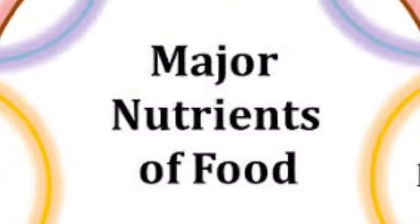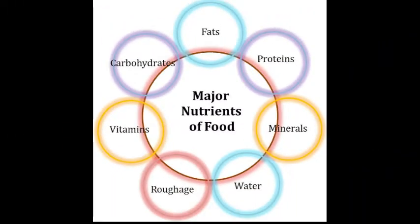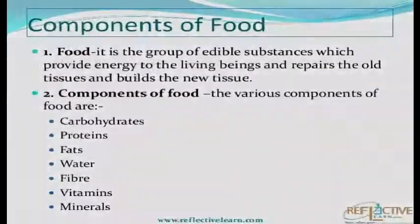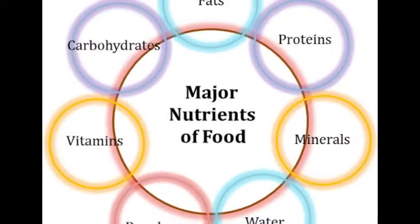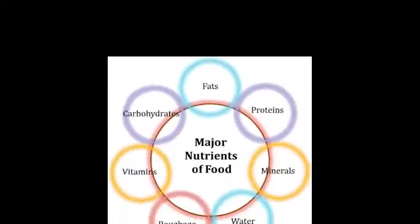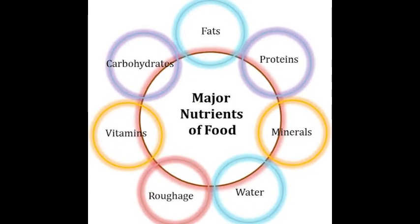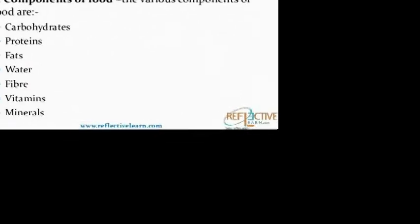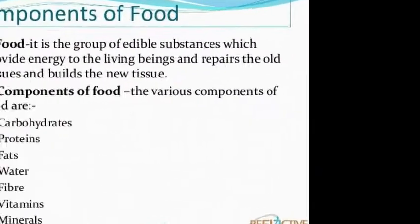The next topic of this chapter is the components of food. There are seven main components present in foods: carbohydrates, fat, protein, vitamins, minerals, roughage or fiber, and water. Carbohydrates, fat, protein, and vitamins are known as organic components, whereas roughage and water are known as inorganic components.